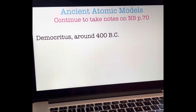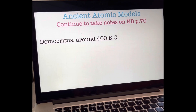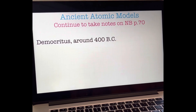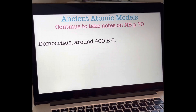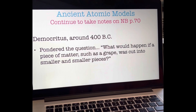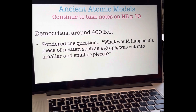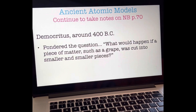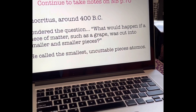Ancient atomic models — let's go back about 2,500 years to discuss the history of the atom, which took place around 400 BC. A Greek philosopher named Democritus pondered what would happen if a piece of matter, such as a grape, was cut into smaller and smaller pieces. He reasoned that there would come a point at which the grape could not be cut any smaller. He called the smallest, uncuttable piece a tomos.